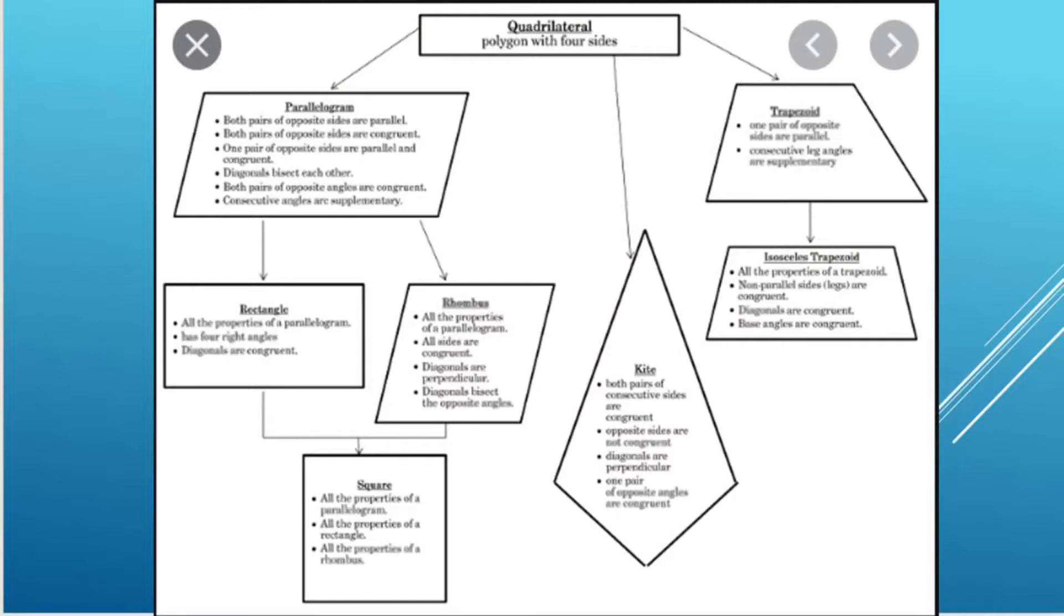A parallelogram is when we have a four-sided quadrilateral with two sets of parallel lines. We have a rectangle, which has two sets of parallel lines and four right angles. We have a rhombus that will have two sets of parallel lines and four equal sides.